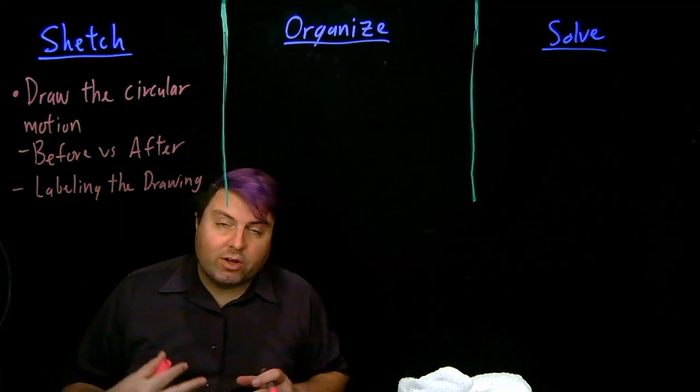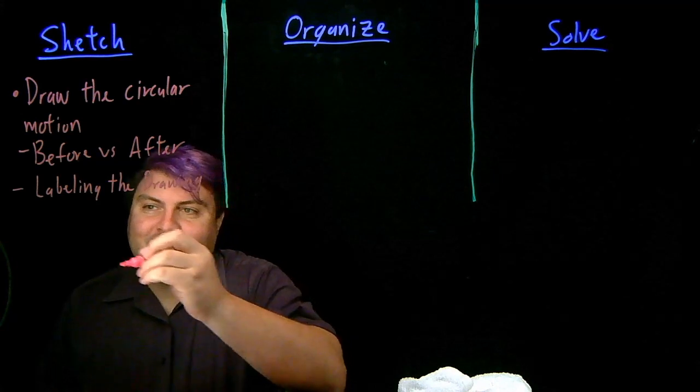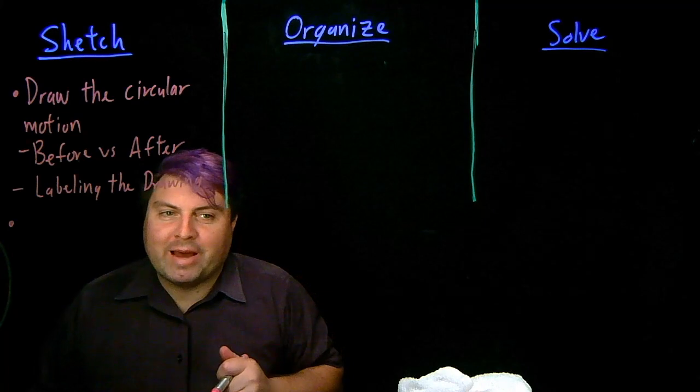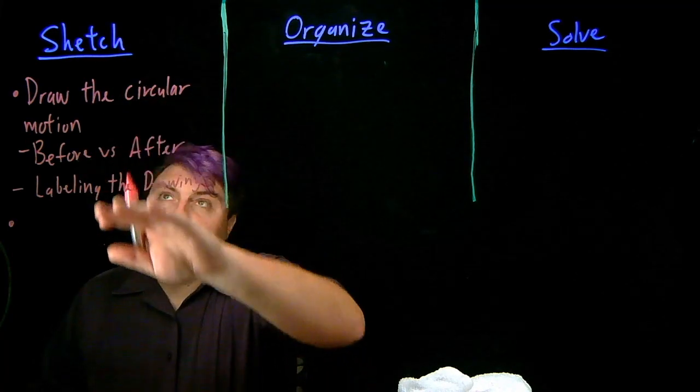Being able to understand what's going on with this is going to help us a whole lot because, again, our brains know how to do physics. They don't know how to do symbolic math involving physics.